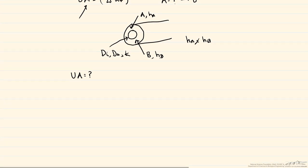Our HA is not equal to HB. And what we want to do is to find our UA. So as we put before, UA is equal to the inverse of the sum of the thermal resistances. So let's take a look at what resistances we have.